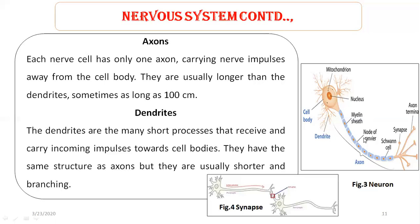The node of Ranvier is a gap in the myelin sheath — a small gap between adjacent Schwann cells. Schwann cells are the myelin-secreting glial cells.